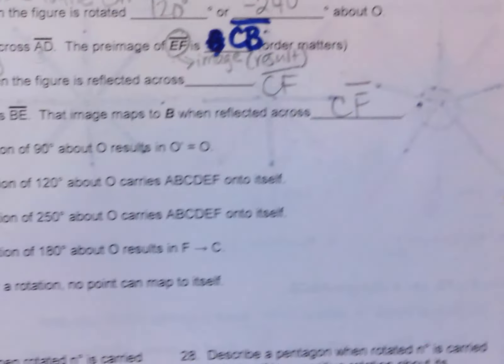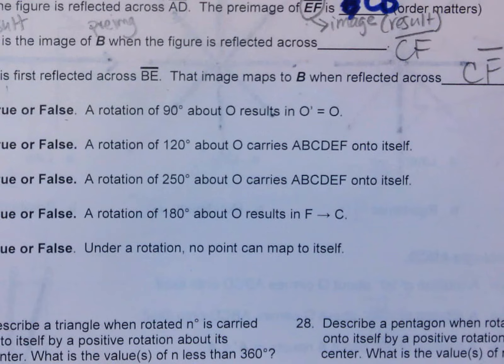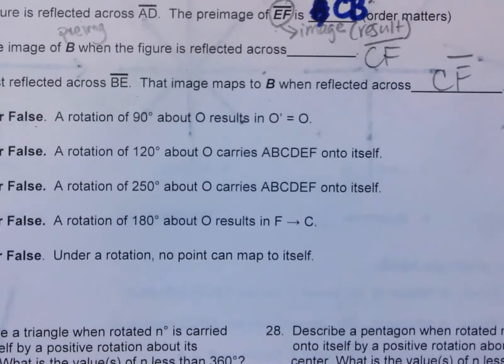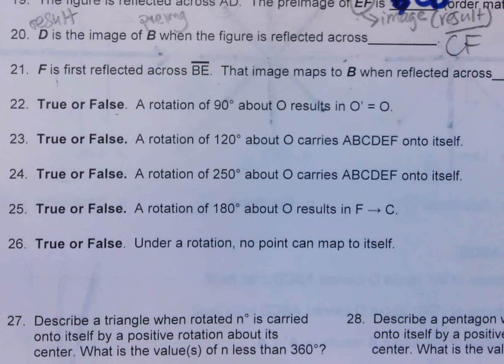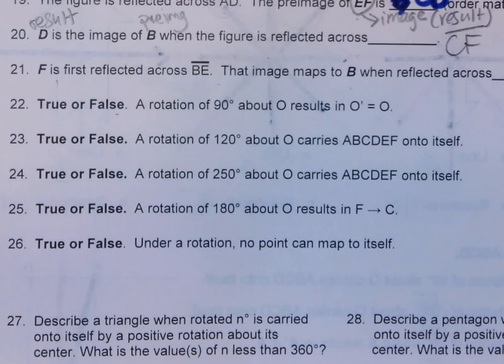Next, true and false questions. True or false? Rotation of 90 degrees about O maps O onto itself. Yes, it is true. If O is the center of rotation and you rotate on that center, then the pre-image and the image is the same. It's at the exact same spot, it's not moving anywhere. The answer is true.